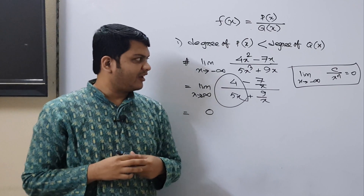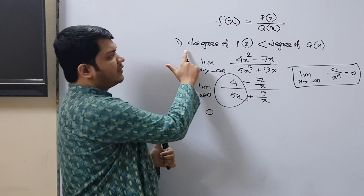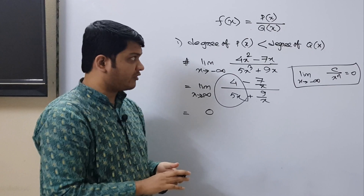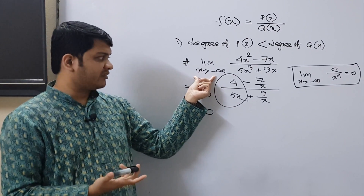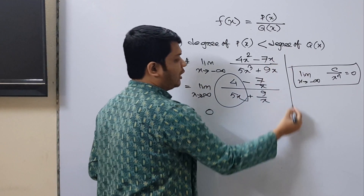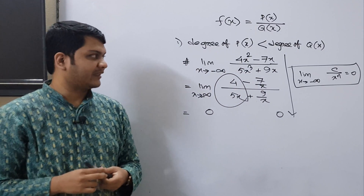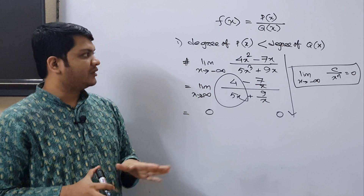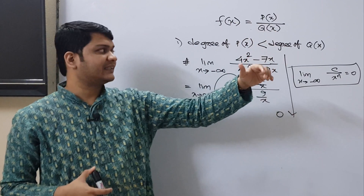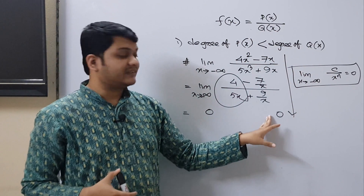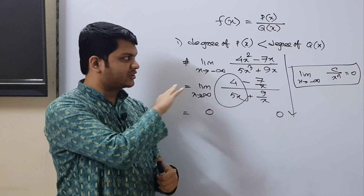So whenever you have a degree of p(x) which is less than the degree of q(x), and the limit is going to positive or negative infinity, you will always get the result 0. This is the hidden trick. Whenever the degree in the numerator is less than the degree in the denominator, the result is 0. I hope this concept is clear.